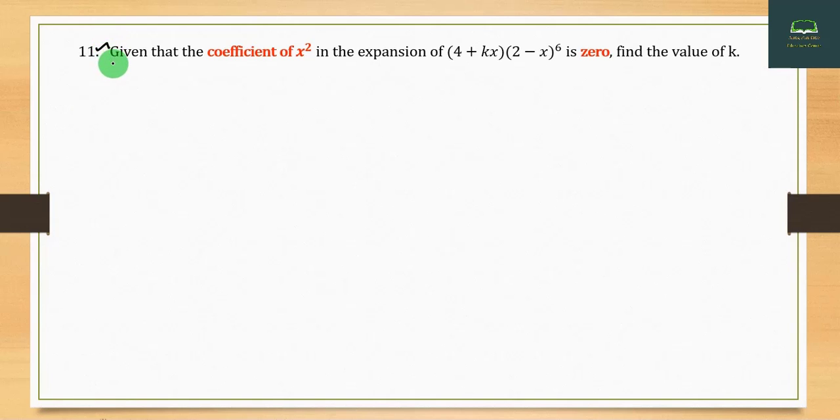Problem 11: Given that the coefficient of x² in the expansion of (4 + kx)(2 - x)⁶ is zero, find the value of k.